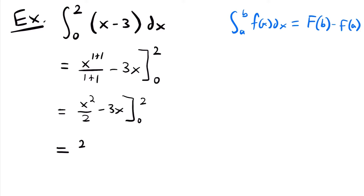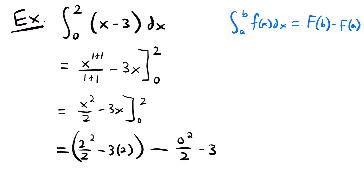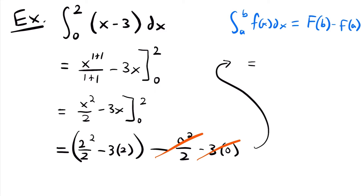This is equal to 2 squared divided by 2 minus 3 times 2, and we subtract 0 plugged into this function — so we'll have 0 squared divided by 2 minus 3 times 0. Both of these terms are just 0, so we don't need to worry about them. Instead we'll focus on the first two: 2 squared is 4 divided by 2, minus 3 times 2, which is 6. So we'll have 2 minus 6, which is equal to negative 4.